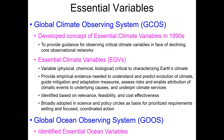The concept of an essential variable was developed by the climate community, by the Global Climate Observing System, back in the 1990s. In the 1990s, the climate observing networks were in jeopardy of continuing — stations were being closed, entire networks were being shut down.